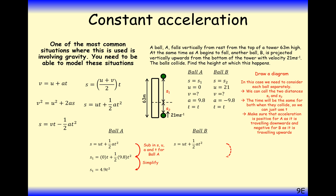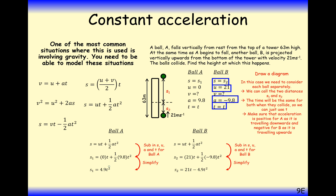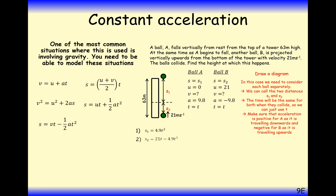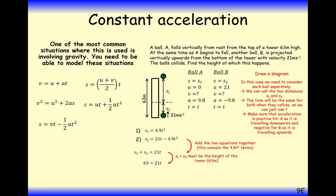Ball B travels upward a distance S2 with initial speed 21. With upwards as positive, acceleration is minus 9.8. Using the same SUVAT formula gives S2 equals 21T minus 4.9T squared. Adding the two equations, the 4.9T squared terms cancel. Since S1 plus S2 equals the total height of 63 metres, substituting 63 allows us to find T.